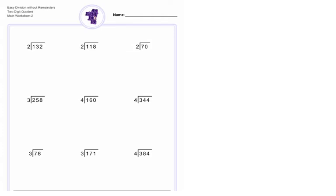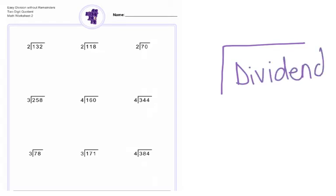The process remains the same and the vocabulary remains the same. Remember, this week your biggest goal is to remember that the number that is being divided into parts is called the dividend. The number that is telling you how many parts you're dividing that dividend into is called the divisor. And your answer is called the quotient.